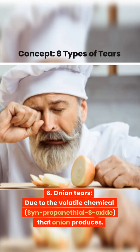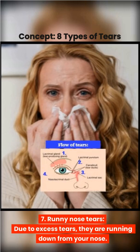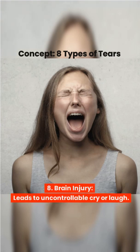6. Onion tears, due to the volatile chemical synpropanethylase oxide that onion produces. 7. Runny nose tears — due to excess tears running down from your nose. 8. Brain injury leads to uncontrollable crying or laughing.